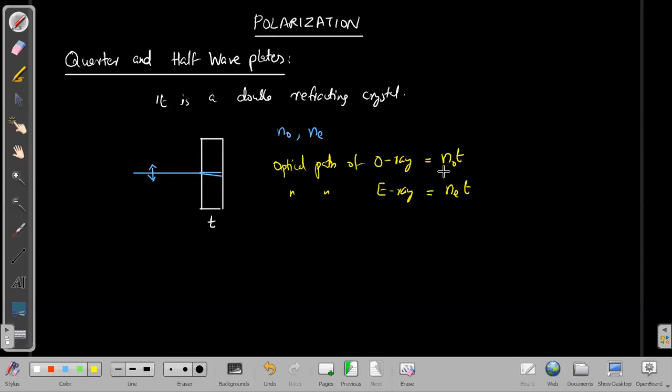Now the difference between these optical paths is called path difference. The path difference between the ordinary and extraordinary ray is given by the modulus of N_O minus N_E times t, because sometimes N_O would be greater or sometimes N_E would be greater depending upon the type of crystal you are using, whether it is a positive crystal or negative crystal.